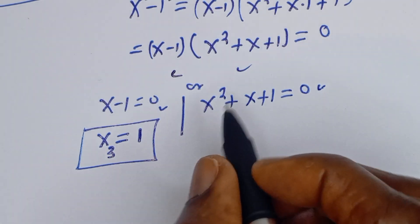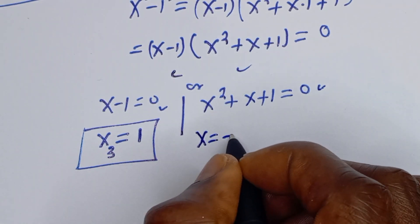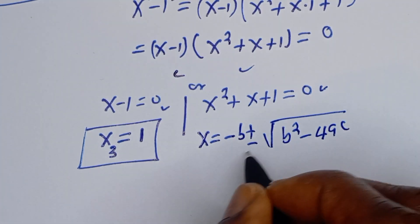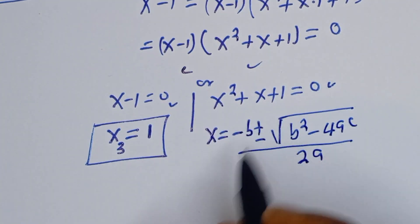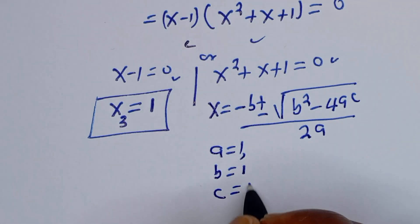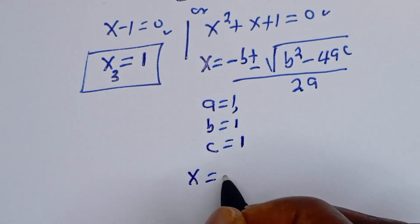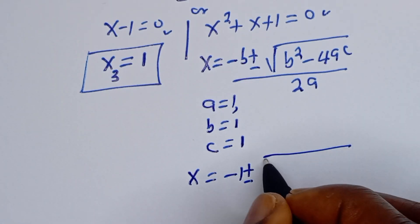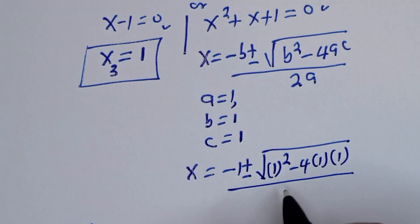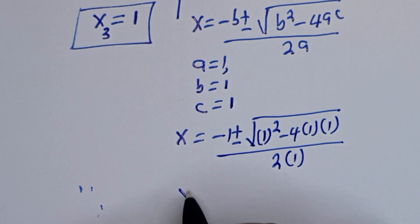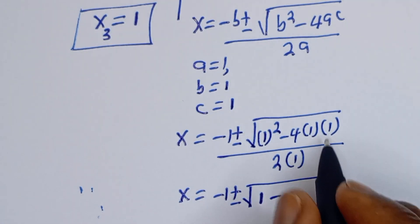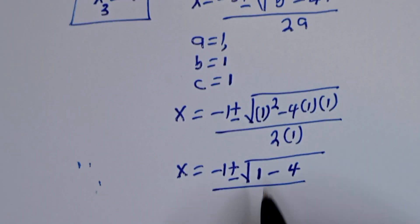This can be solved using the quadratic general formula: S is equal to minus B plus or minus square root of B squared minus 4AC over 2A. From this equation, A is equal to 1, B is equal to 1, C is equal to 1. Substituting: S is equal to minus 1 plus or minus square root of 1 squared minus 4 times 1 times 1, over 2 times 1, that is 2.